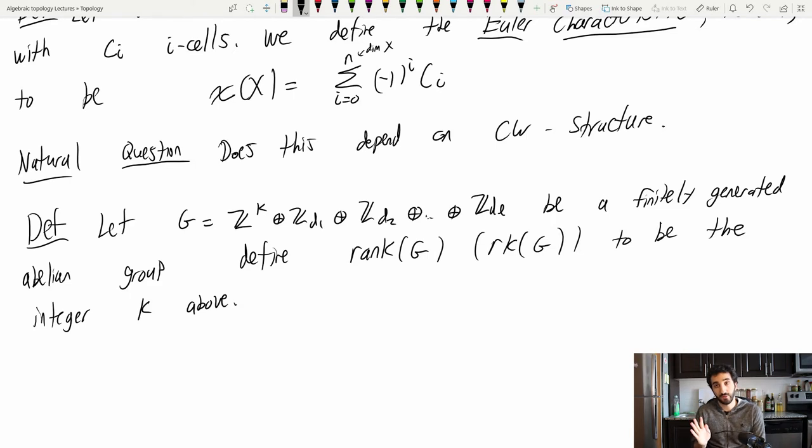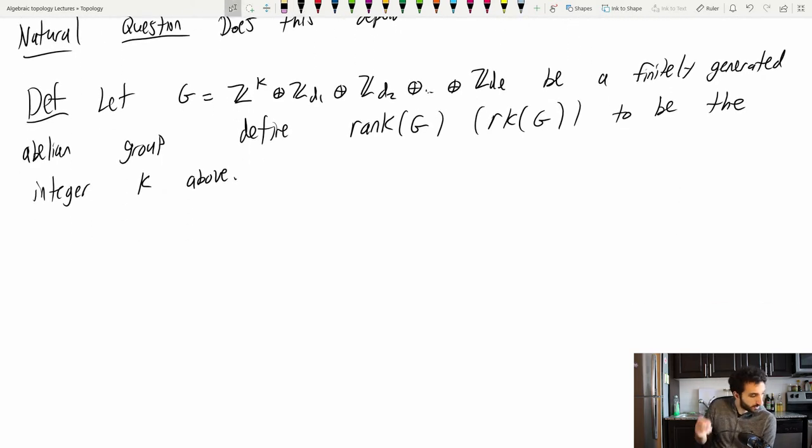So this can be confusing sometimes. I personally like to think of rank as the minimal number of generators of a group, but that's not the same thing here. We're just talking about the free part, at least for this class.